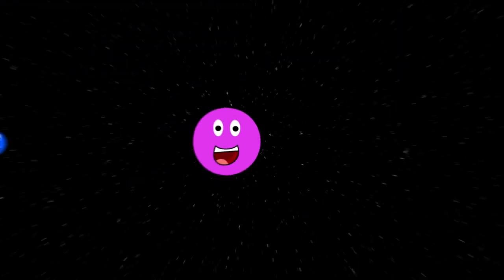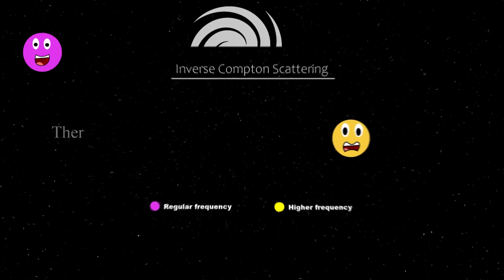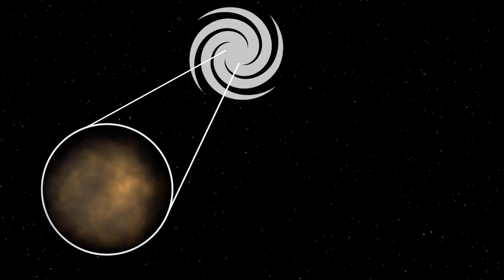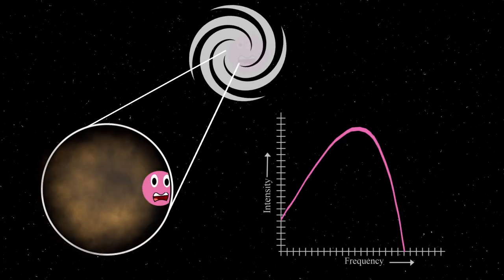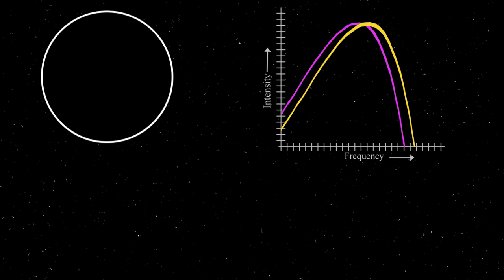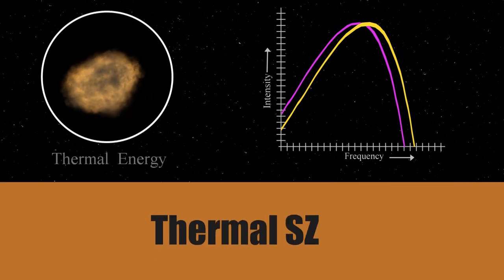This is mainly done through an effect called inverse Compton scattering, where a high-energy electron collides with a photon, scattering it to a higher frequency. When the CMB photons interact with the hot gas in the center of the galaxies, the energetic electrons inverse Compton scatter them and shift the photon spectra. This shift, resulting from the thermal energy of the gas, is called thermal S-Z.